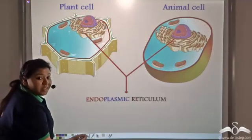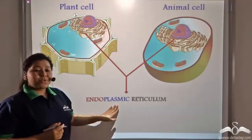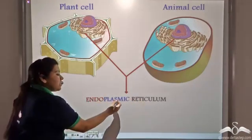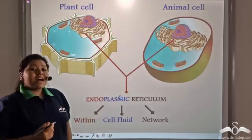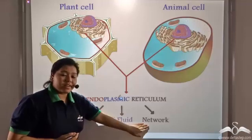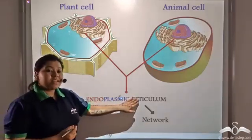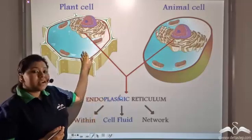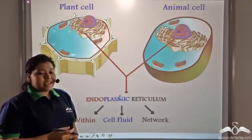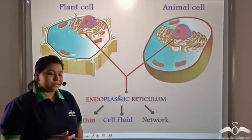So what is the name of this connecting organelle? It is known as the endoplasmic reticulum. Endo means within, plasmic means cell fluid, and reticulum means network. So the endoplasmic reticulum is an organelle present in both plant and animal cells that forms a network within the cell, embedded in the cell fluid or cytoplasm.